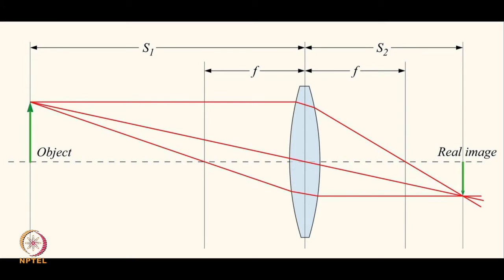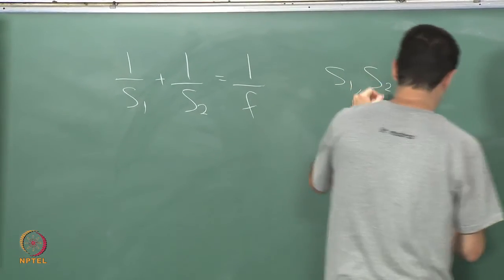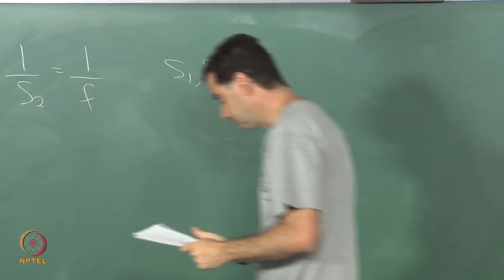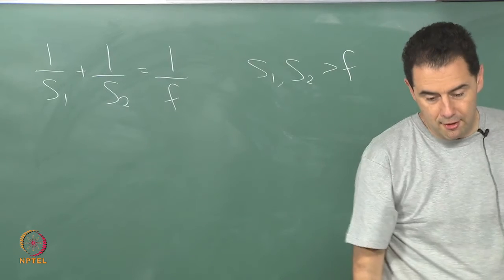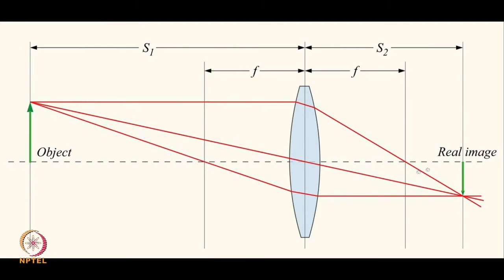The expression for this is 1 over s1 plus 1 over s2 is equal to 1 over f, the focal length. And notice in this picture that s1 and s2 are greater than f.